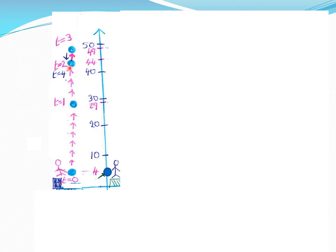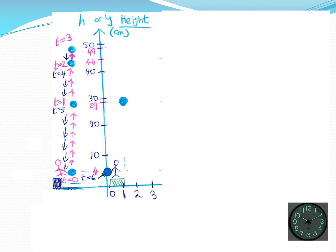The ball has started to fall. By symmetry of the parabolic path, after four seconds the ball is at the same position it was at after two seconds — 44 meters. After five seconds it's back at 29 meters (same as after one second). After six seconds the height is back to four meters. The question then is how much longer until the ball lands on the ground.